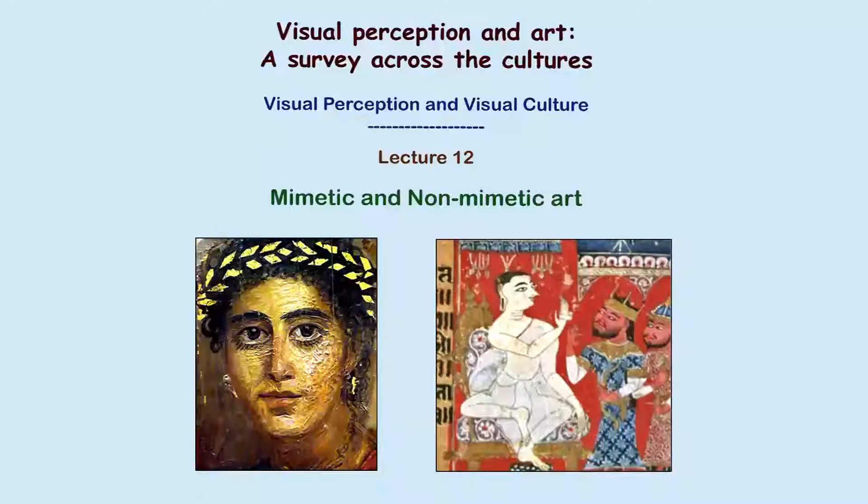Mimetic and non-mimetic are two terms that refer to two different kinds of visualization. Generally speaking, mimetic art is that kind of art — be it painting or sculpture — where the reference to the real world is very strong. All arts generally speaking, unless purely abstract, have some reference to the real world; it is just a matter of degree.